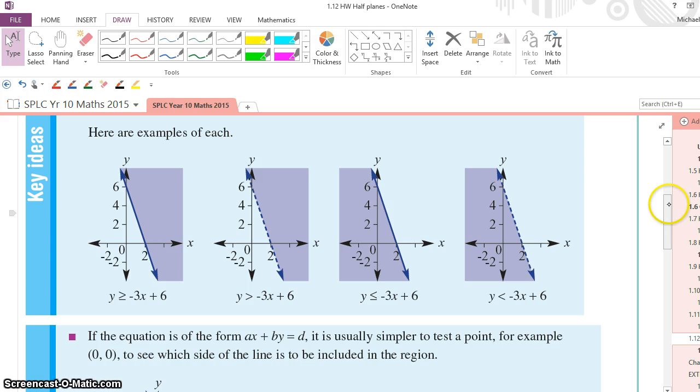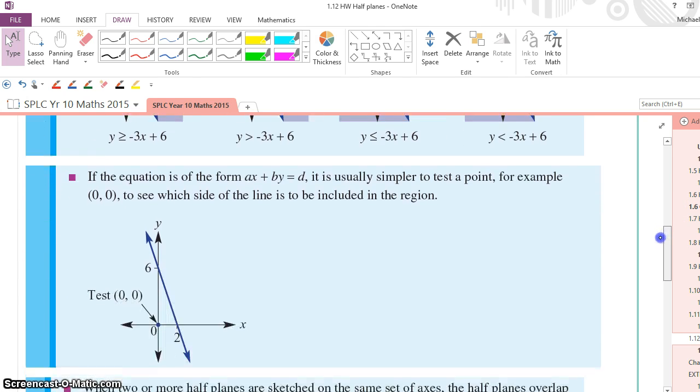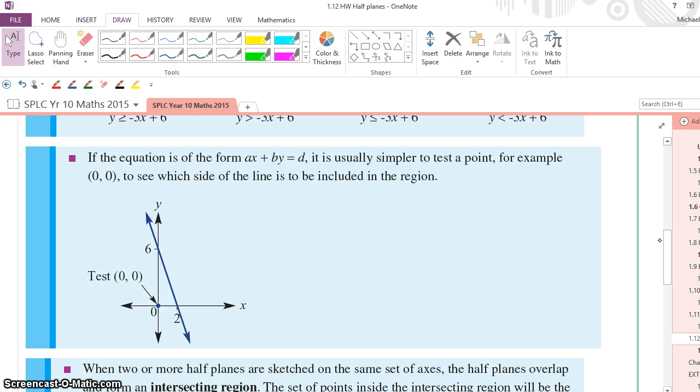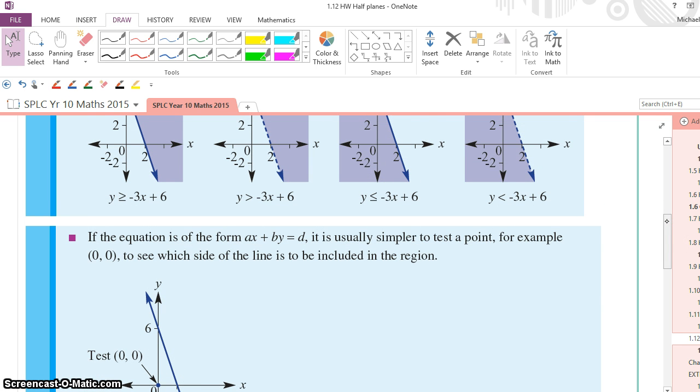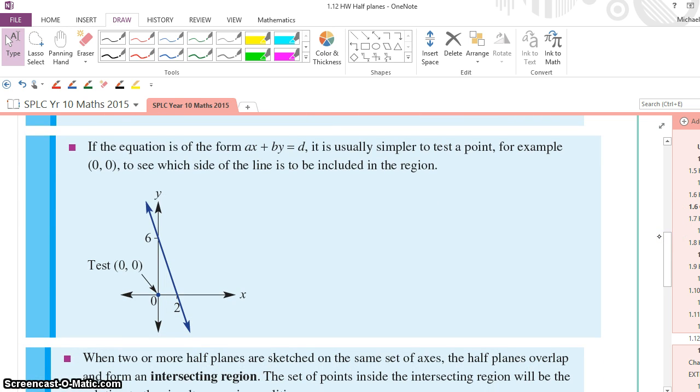Now, the procedure for sketching these is quite simple. The first thing you do is you just sketch it as if it was an equation, and then select the broken line or solid line, depending on which inequation symbol you have in that question. Then, to ensure you shade the correct side, you test a point to see whether or not it lies in the correct region or the region that we do not want.